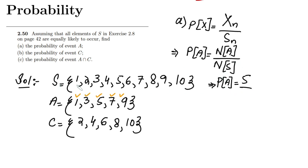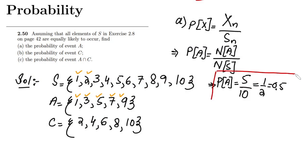Similarly, how many elements are there in the sample space? We have one through ten, so there are 10 total elements. Therefore, the probability of A is 5 divided by 10, which is 0.5. That is the probability of event A. All elements here have equal probabilities, so these are equiprobable.